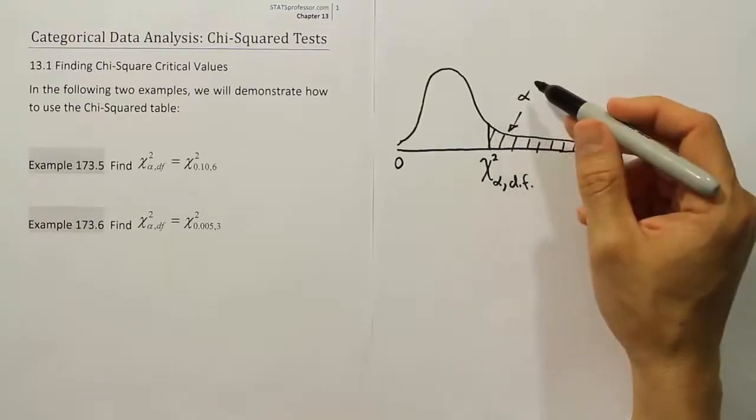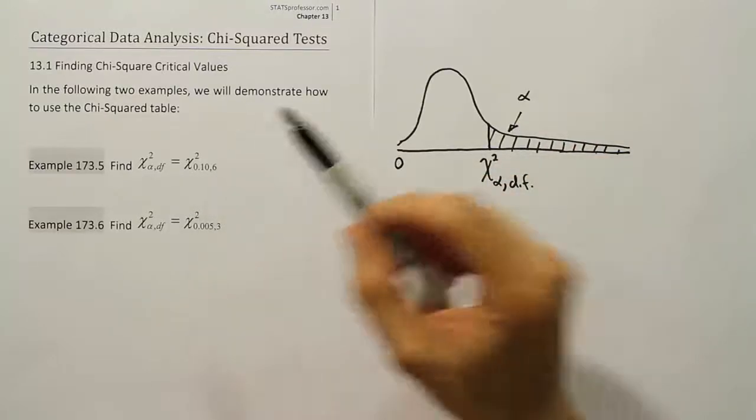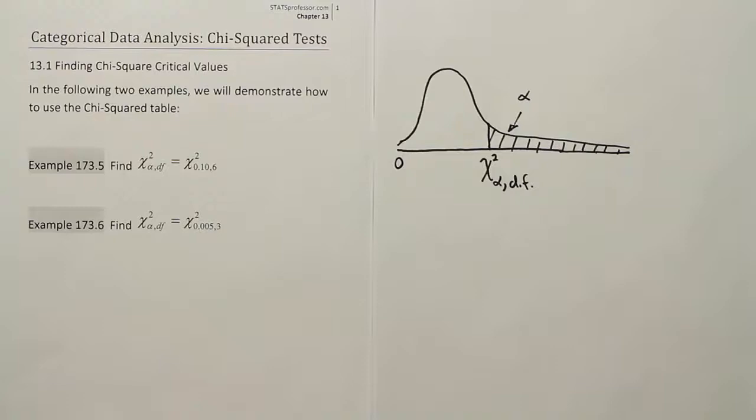Let's go ahead and go to our table now, looking up an alpha of 10% and a degrees of freedom of 6. And let's find the chi-squared value in that case. So this is example 173.5 we're doing first.